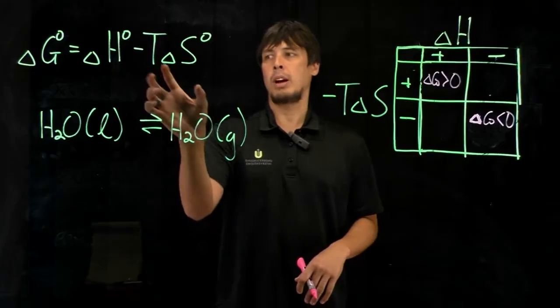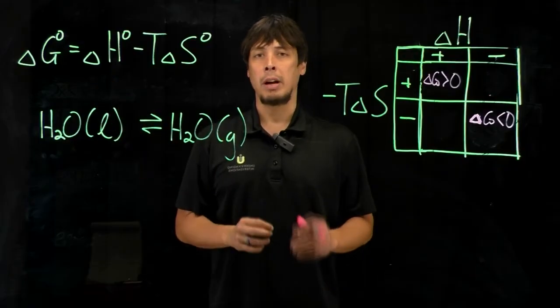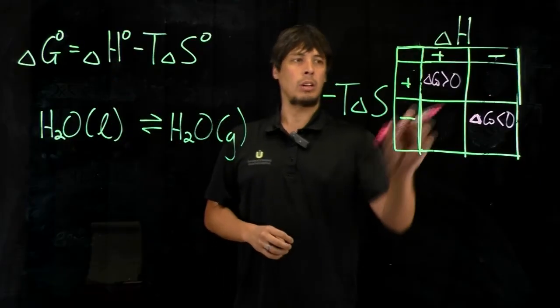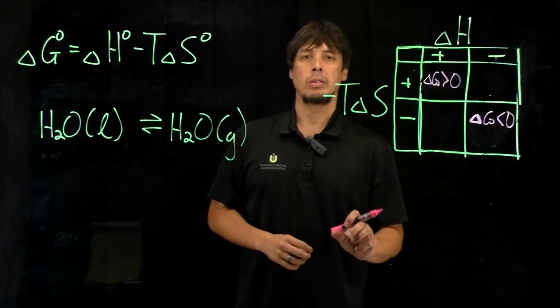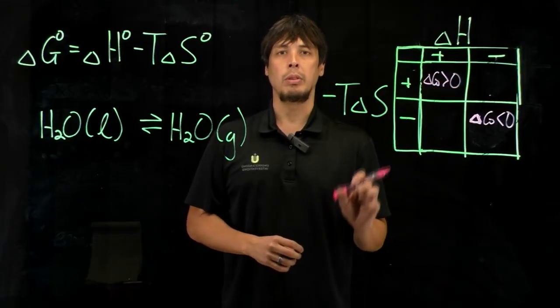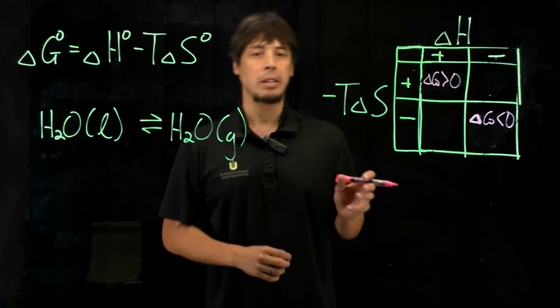Conversely, if both the enthalpic and the entropic term are positive, delta G is also going to be positive, and so the reaction will be reactant favored or non-spontaneous.